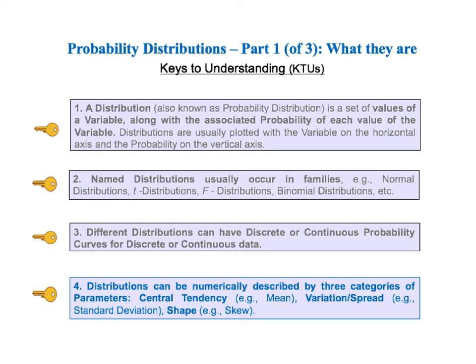And the final KTU states distributions can be numerically described by three categories of parameters. Central tendency, for example mean, variation or spread, for example standard deviation, and shape, for example skew.